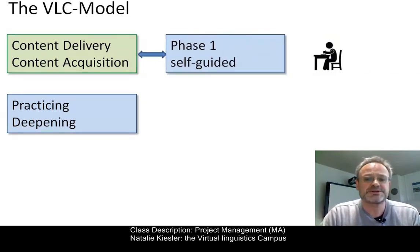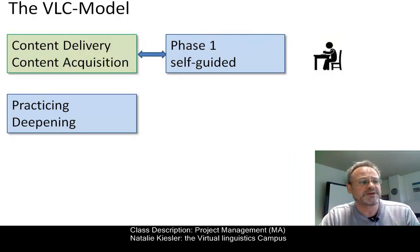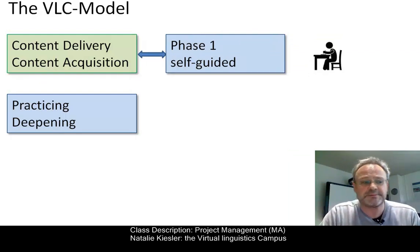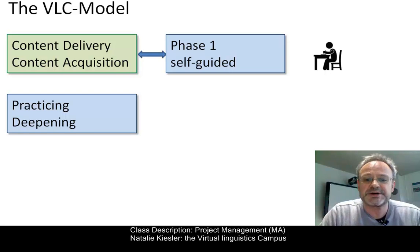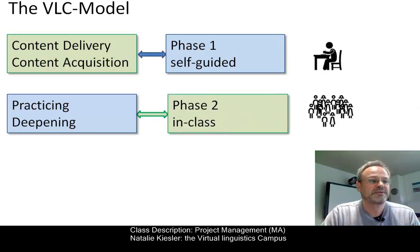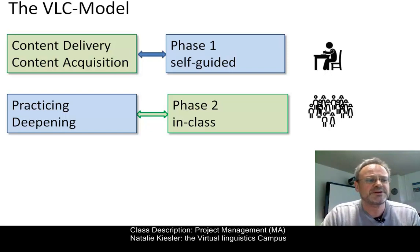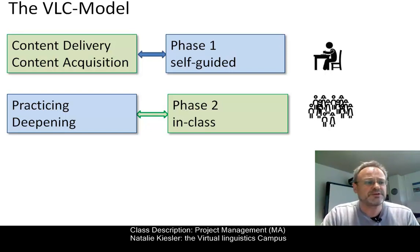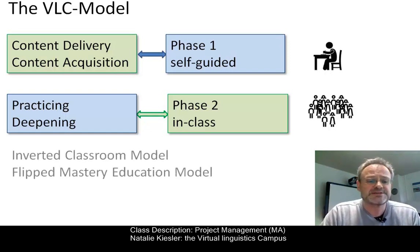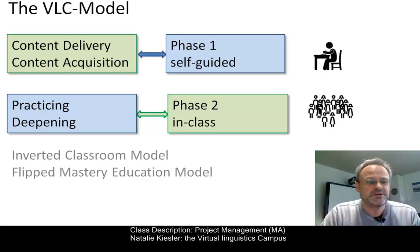Content acquisition is now self-guided, takes place first and is done online. The additional in-class meeting is now dedicated to practicing, to rehearsing, to discussions, to analysis, etc. This means, prior to each in-class meeting, students must have worked through the online content of the respective unit. This approach is referred to as the inverted classroom model or the flipped mastery education model.